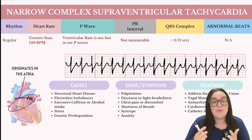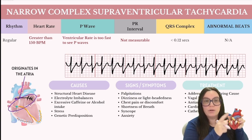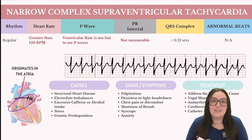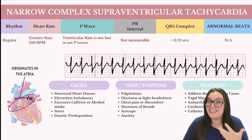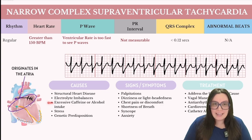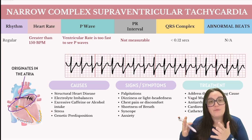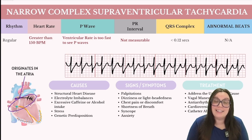What are some of the causes behind SVT? Structural heart disease — any underlying heart condition — can predispose someone to SVT. Electrolyte imbalances, particularly abnormalities in potassium and magnesium levels, are also a factor. Excessive caffeine and alcohol intake can exacerbate or trigger these episodes. Emotional and physical stress can initiate SVT as well. Lastly, some individuals have a genetic predisposition when it comes to SVT, with various genetic factors that can lead to its development.